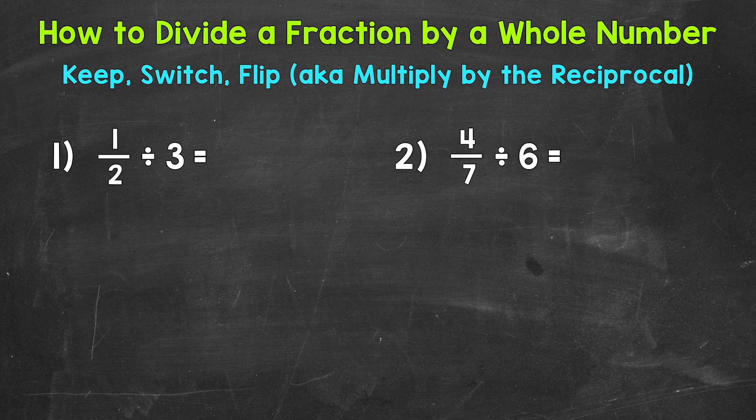Let's jump into number one where we have 1/2 ÷ 3. So we are taking one half and dividing it into three equal groups or parts. Let's rewrite the problem using keep switch flip in order to solve this.